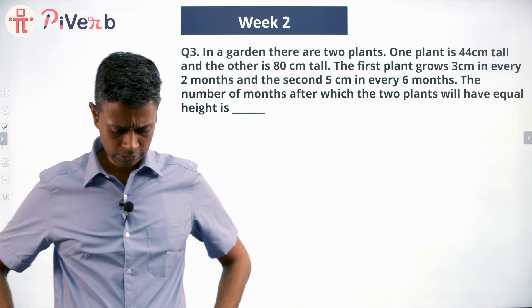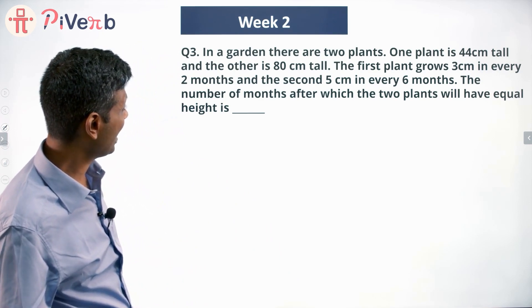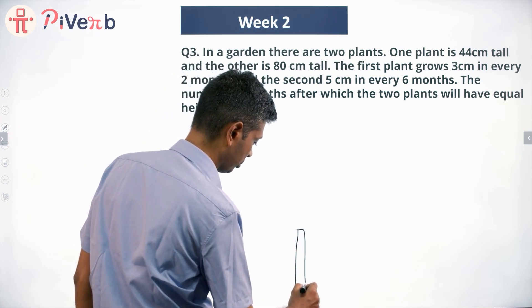In a garden there are two plants. One plant is 44 centimeters tall and the other is 80 centimeters tall. So this is 44 centimeters tall, this one is 80 centimeters tall.